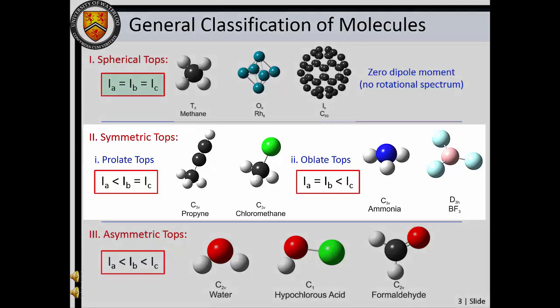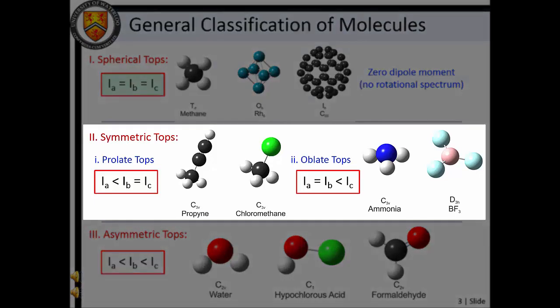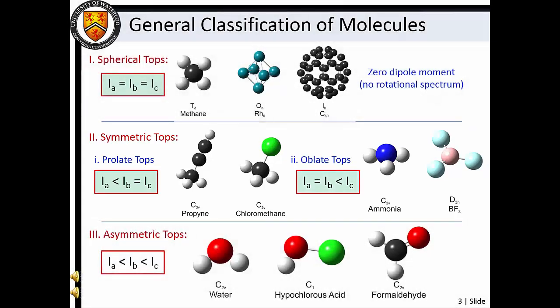Molecules in which two of the three moments of inertia are equal are known as symmetric tops. If the two largest moments of inertia are equal, the molecule is referred to as a prolate top. If the two smallest moments of inertia are equal, the molecule is an oblate top. Symmetric top molecules exhibit pure rotational spectra and have a relatively simple analytical form for rotational energies. We will explore these molecules in more detail.